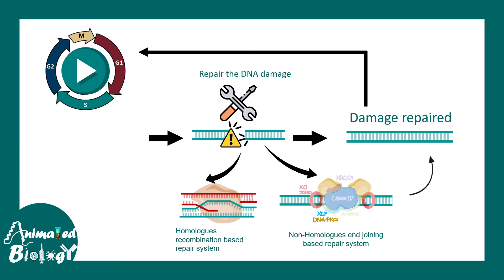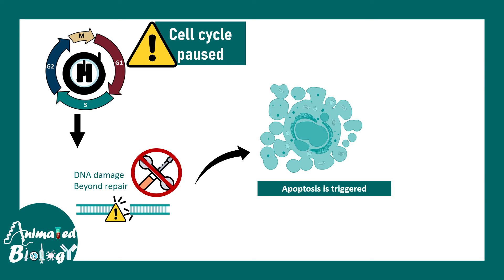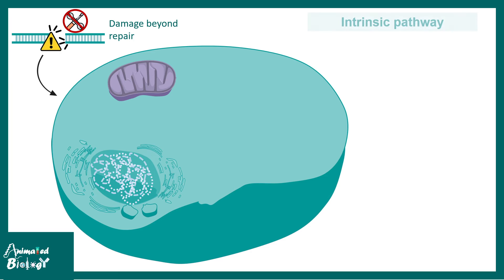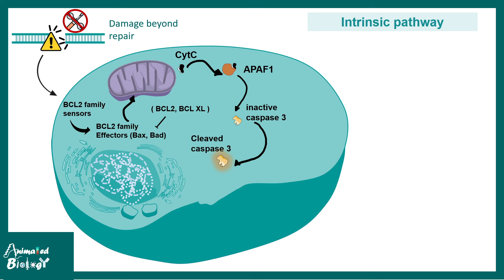But imagine a situation when the damage is not repairable — it is an irreparable, irreversible damage beyond repair. In that case, p53 coordinates with the intrinsic pathway of apoptosis and triggers the death of the cell. It is better to kill the cell instead of allowing it to segregate faulty chromosomes or accumulate mutations. The p53-mediated pathway ultimately activates caspases. p53 induces expression of BCL2 family proteins such as Bax and BAD, which poke holes in the mitochondrial membrane, leading to a leak of cytochrome C. Cytochrome C, along with APAF-1, ultimately activates caspase-3, and active caspase-3 leads to DNA fragmentation and digestion of many cellular enzymes.